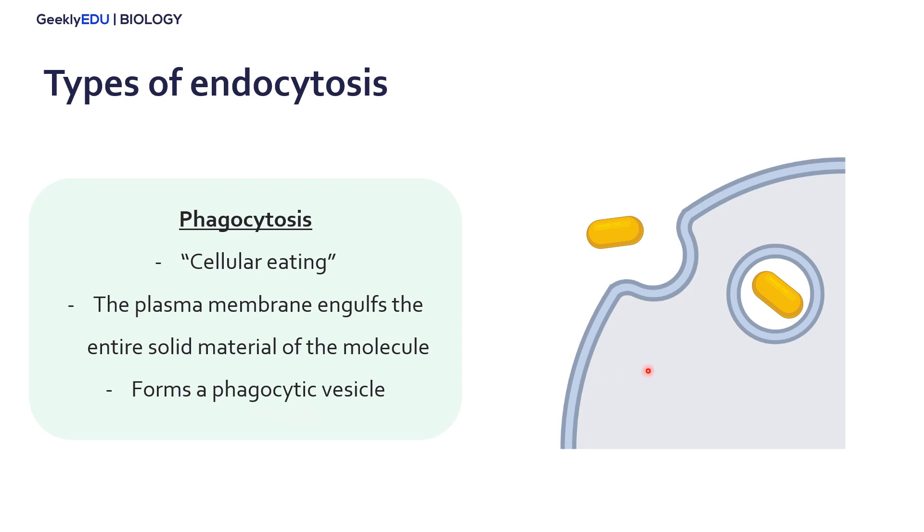We can see this here. The light gray is inside the cell - our cytoplasm. The plasma membrane or lipid bilayer will engulf this large molecule. The membrane will close in on itself to create the vesicle, which will then move to other parts of the cell.